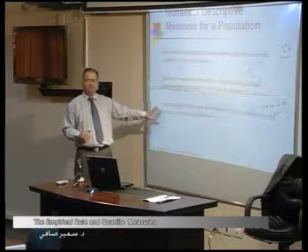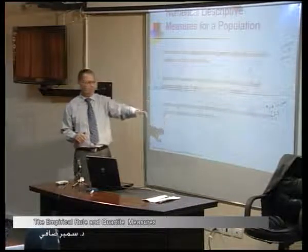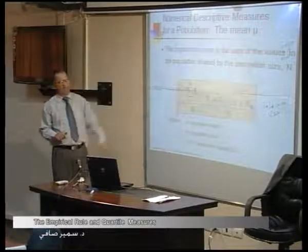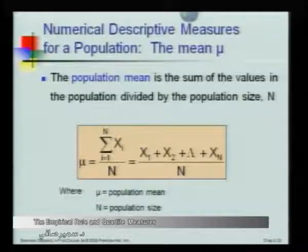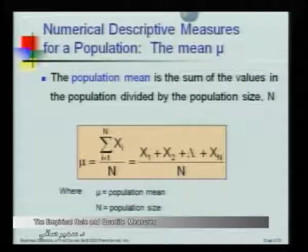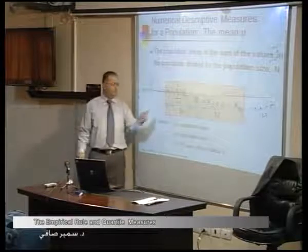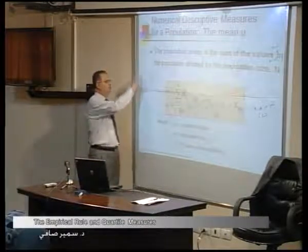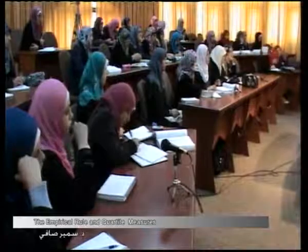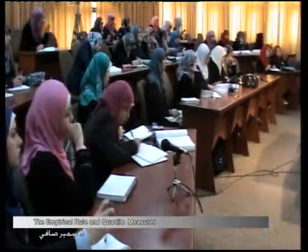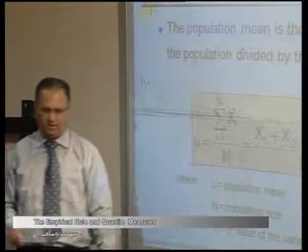The important population parameters are population mean, variance, and standard deviation. The population mean is defined similarly to the sample mean — the sum of the values divided by the population size N, rather than the sample size. For the sample mean we use x-bar, but here we use the Greek letter mu. So mu is the sum of the xi values divided by the population size N, where xi is the i-th value of the variable x.